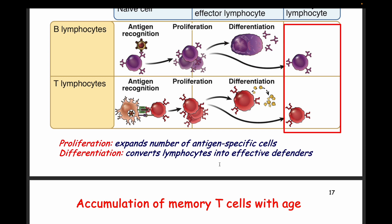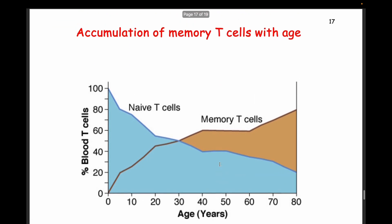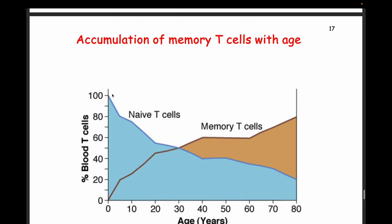Proliferation and differentiation increase the number of antigen-specific cells. Differentiation converts lymphocytes into effective defenders — effector B or T cells and memory B or T cells. From birth we have a reservoir of naive T cells with all different specific receptors. As we encounter pathogens throughout life, naive T cells differentiate into effector and memory T cells, so the proportion of memory T cells increases over time. This is the basis of adaptive immunity.